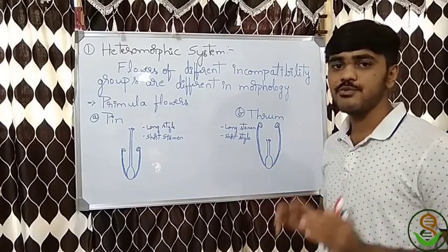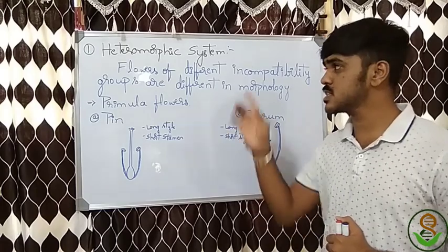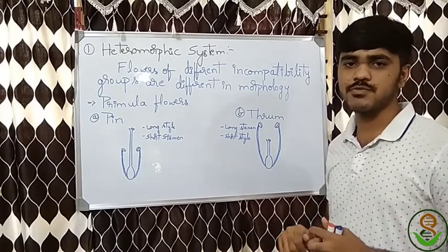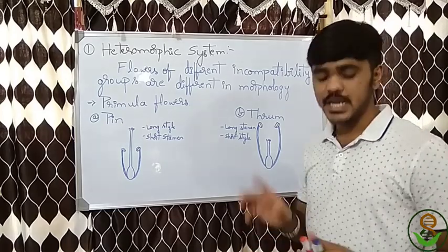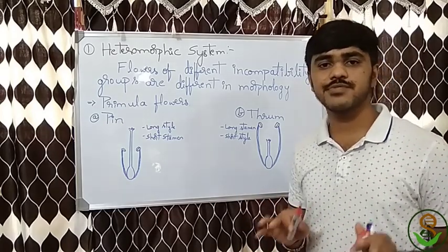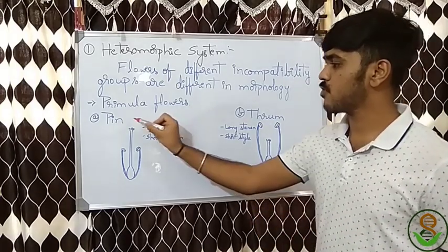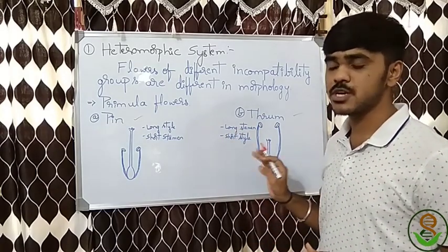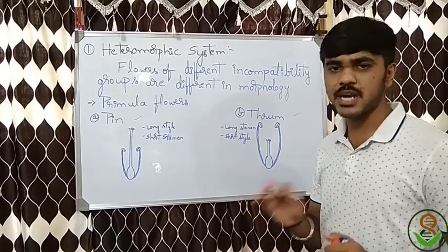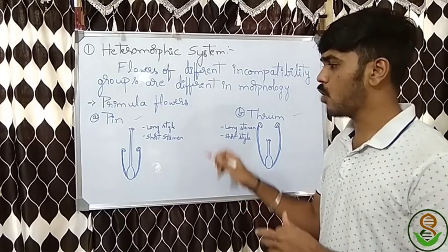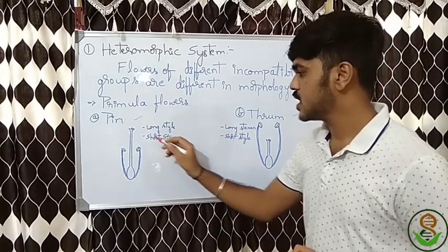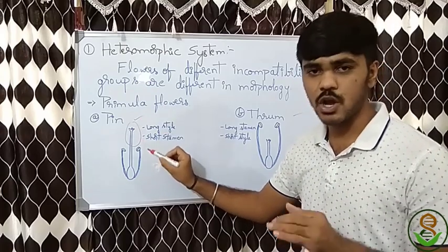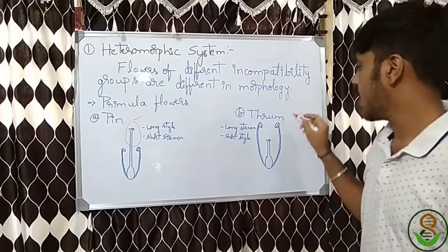To explain this concept we use Primula flowers — this is the best and most commonly used example for explaining the heteromorphic system. In Primula flowers we see two morphologically different flower types: pin flowers and thrum flowers. These are the two incompatible groups but actually compatible to each other. In pin flowers the style is very long and the stamens are short.